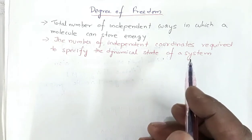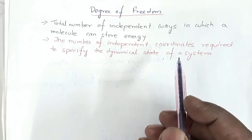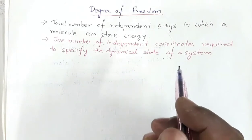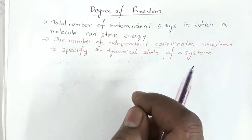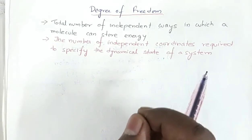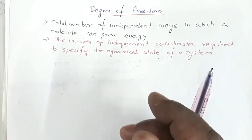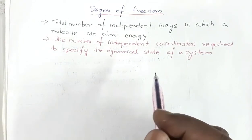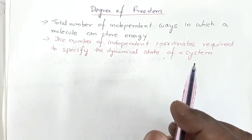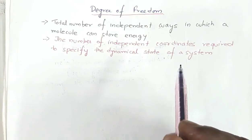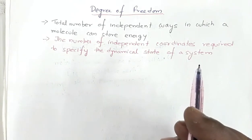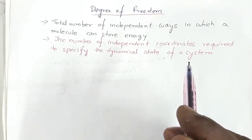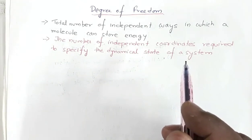In this video I am going to explain the topic degree of freedom. The basic concept is: when a gas molecule acquires energy or is given some energy from an external source, the molecule will try to spend the energy in some independent ways. Anything in this universe always tries to stay in a state of minimum energy, so if a molecule is given some energy it will spend that energy and try to acquire the state of minimum energy.